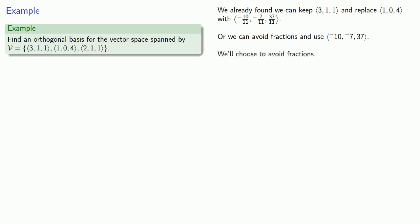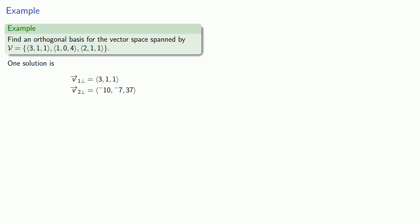Let's choose to avoid fractions. And so, we'll keep our first vector (3,1,1). We'll replace our second vector with (-10, -7, 37). And then replace our third vector with something else. The only requirement is we're going to replace our third vector with a linear combination of the other basis vectors and the vector that we're replacing.